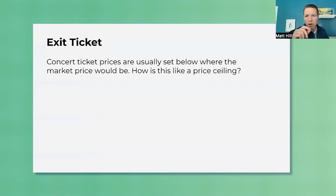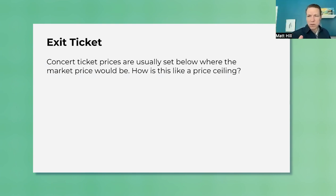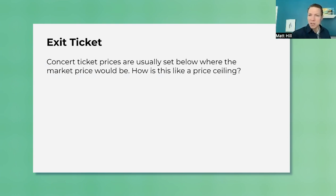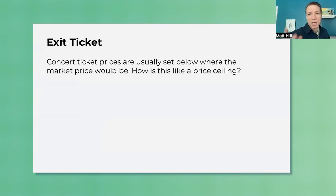Extra ticket — concert tickets. Concert tickets are almost always below what the market price would be. You can see this in the aftermarket: the prices are always higher for a concert people want to go to than the initial price. So how's that like a price ceiling? Well, it's below the equilibrium, and lo and behold, we have the same phenomenon — an underground market develops. Also there's a shortage: more people would like to buy these concert tickets than exist at the posted price. So they sell out fast and everyone's like, I wanted to get a concert ticket. You can think of concert ticket prices just like a price ceiling — it's a nice little analogy.